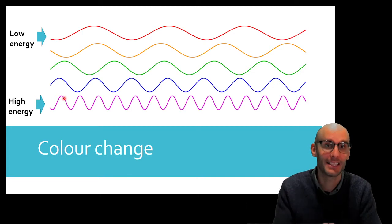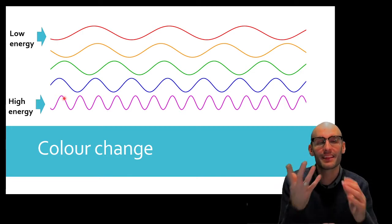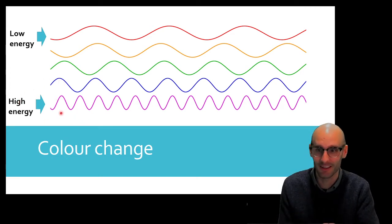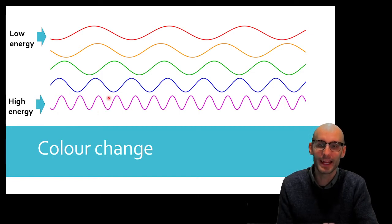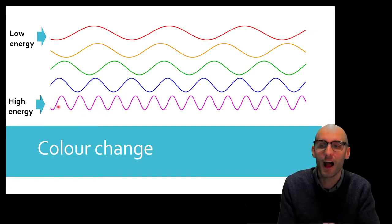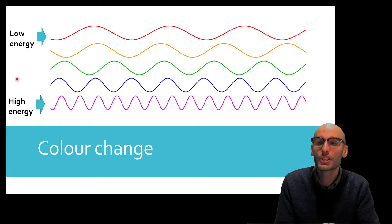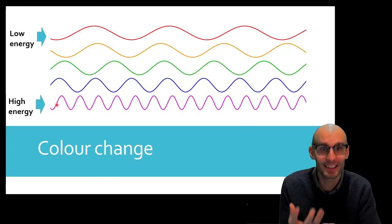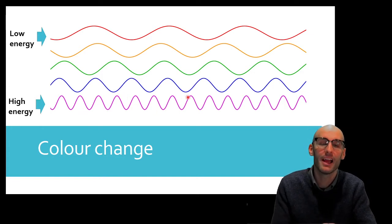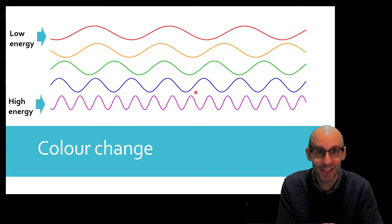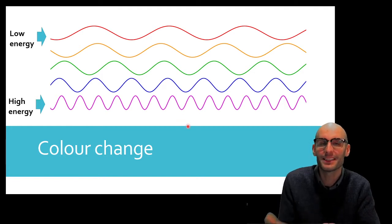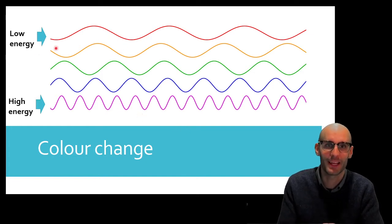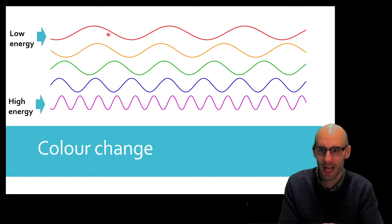In fluorescence we have an excitation wavelength — something that will excite the thing we're trying to look at — and that is typically high-energy light, which means high-frequency light. In fluorescence, it changes that high-energy excitation light to a lower-energy emission wavelength. So it's really just a color change. We take in a high-energy, high-frequency excitation wavelength and end up with a lower-energy, lower-frequency emission wavelength.